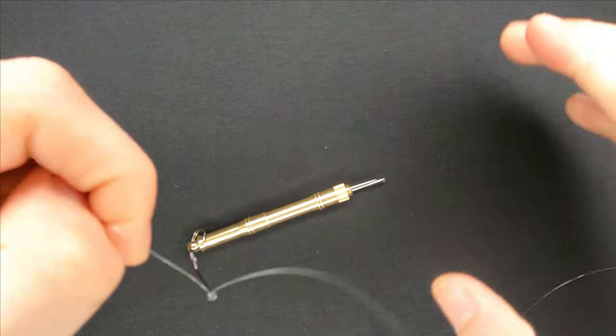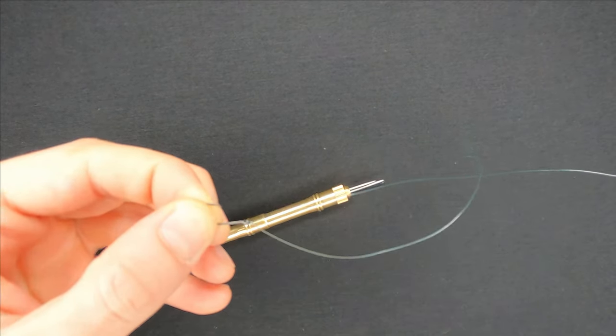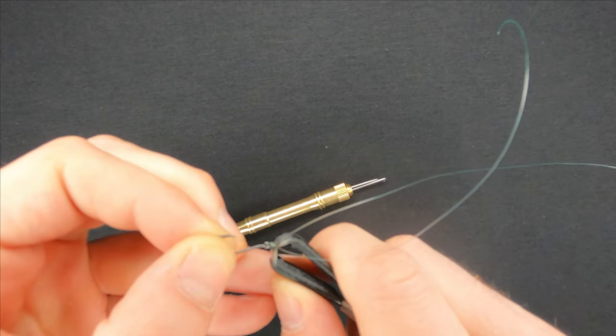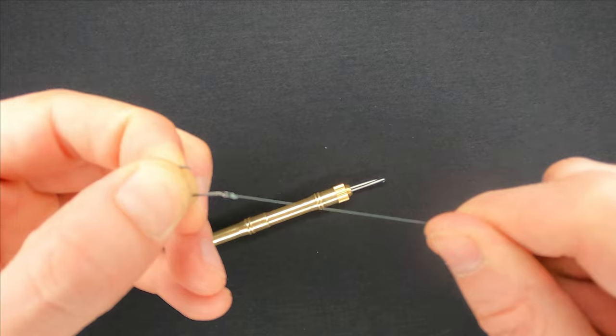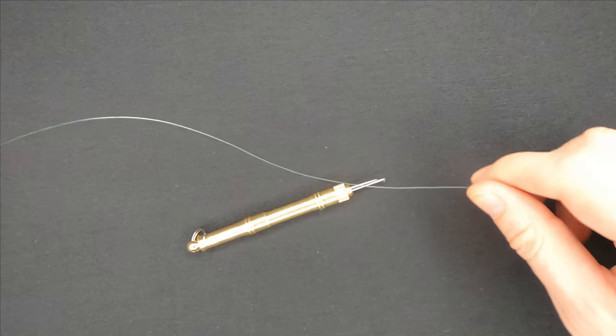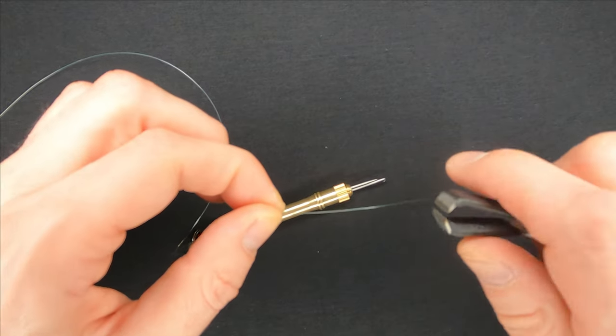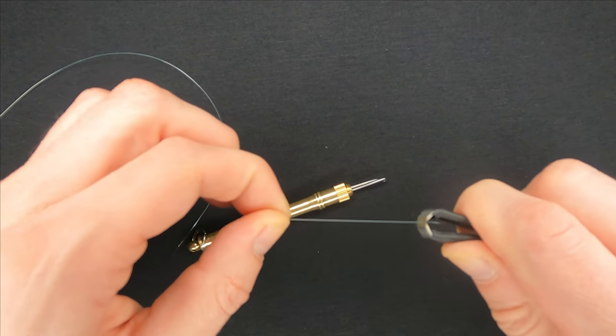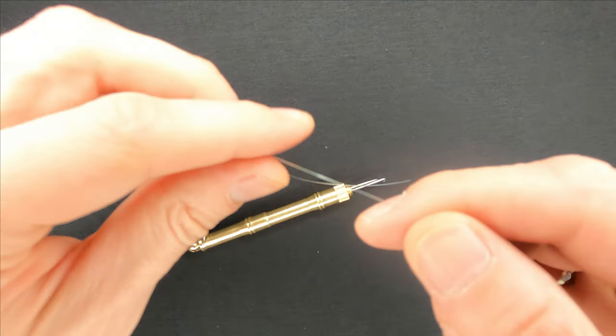Make the knot tight, cut the unnecessary line, and that's it for the hook. Now I'll show you how to tie small loops on the line, and as a demonstration I'll use the same line with the hook.